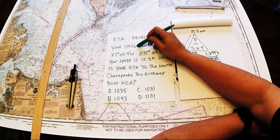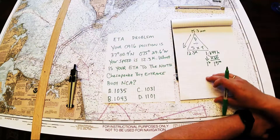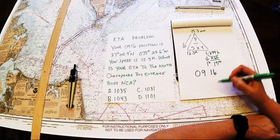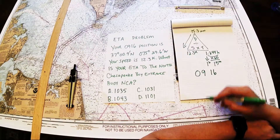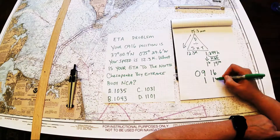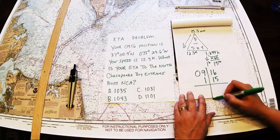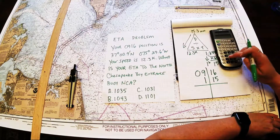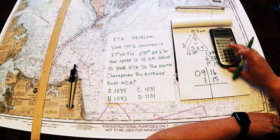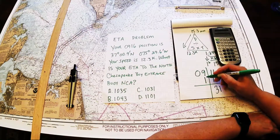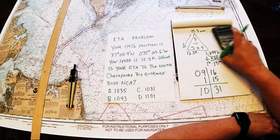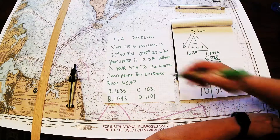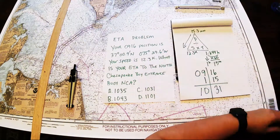The problem tells us we're leaving at 0916. Leave a little space for your hours and your minutes and we're going to travel 1 hour and 15 minutes. Put in your time tee like we always teach you — do the minutes first. 16 plus 15 gives us 31. 9 plus 1 gives us 10. This tells us we're going to arrive at the NCA buoy at 1031, which makes C the appropriate answer.